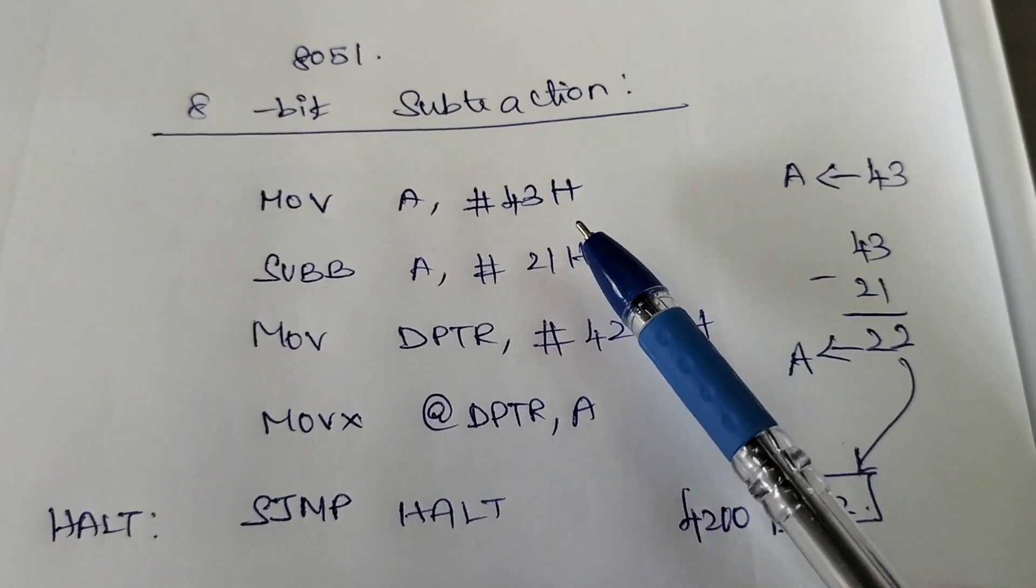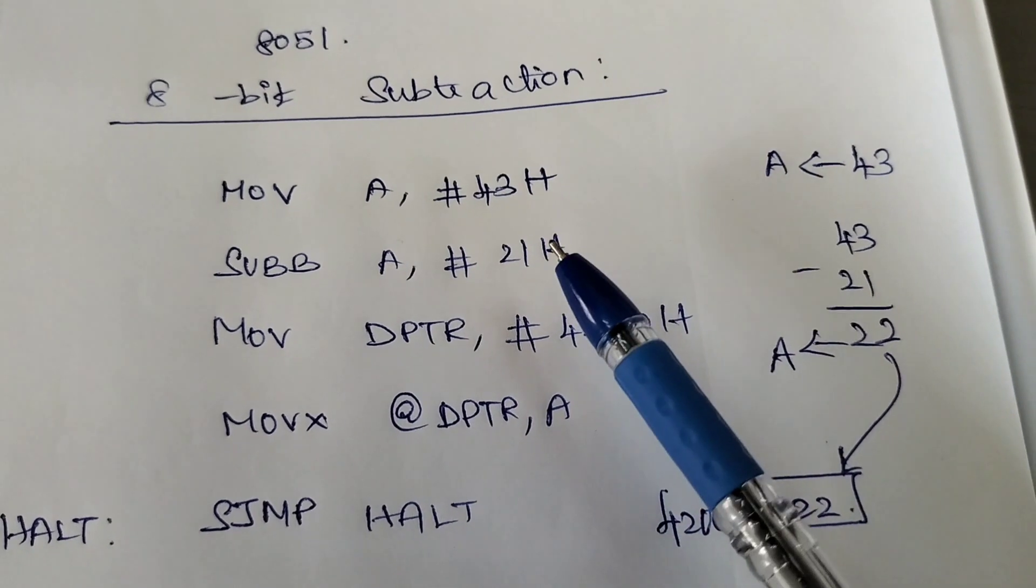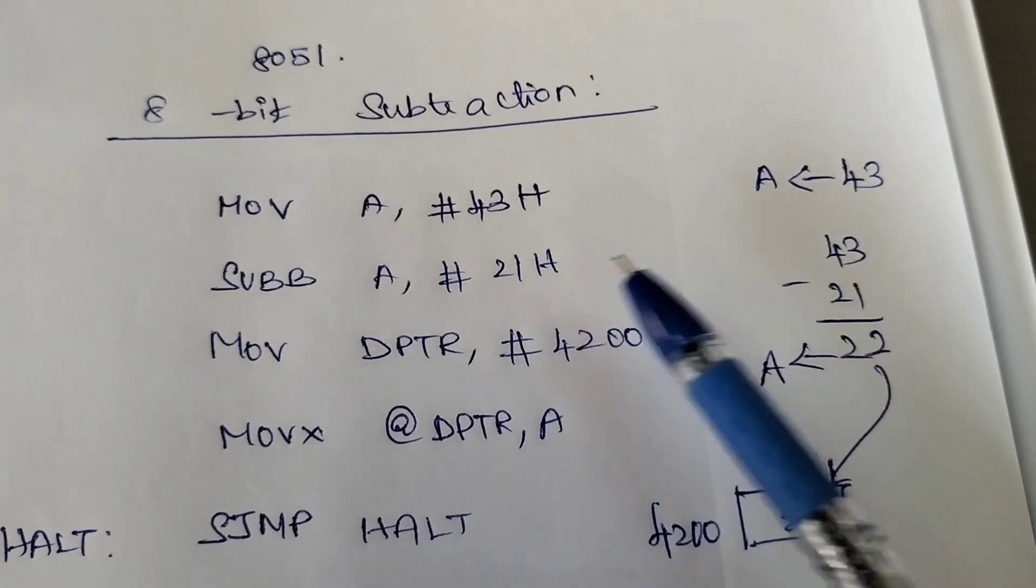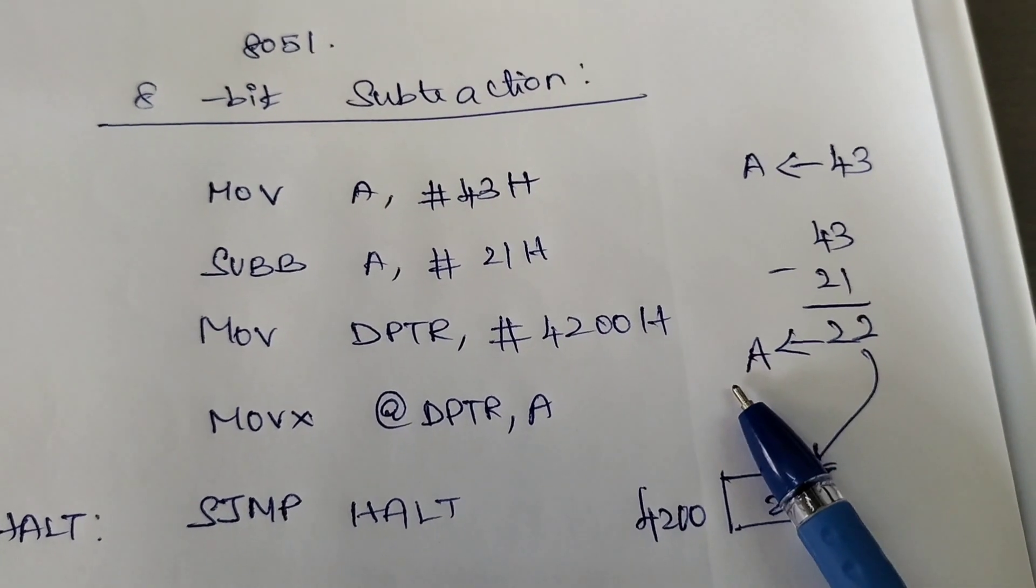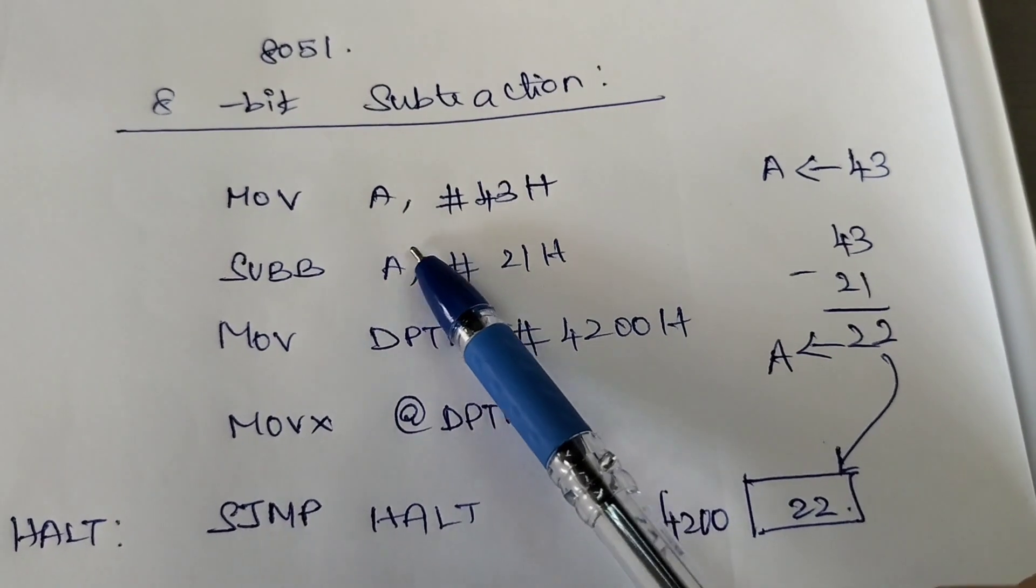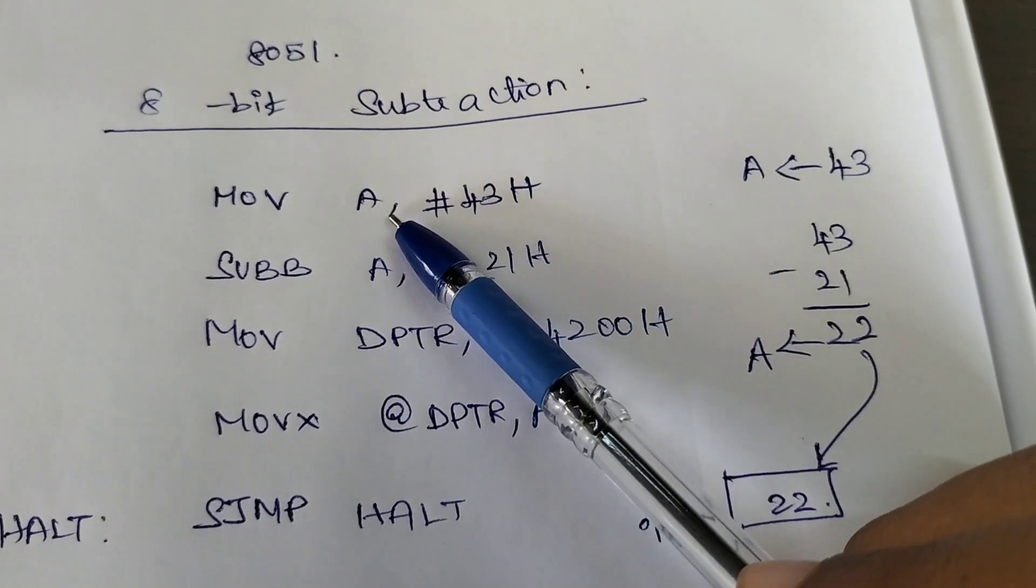Here we are getting two data values. From the first data, we are going to subtract the second operand, and then the result we are going to store in the accumulator. First, we are getting the first data 43 in the accumulator.